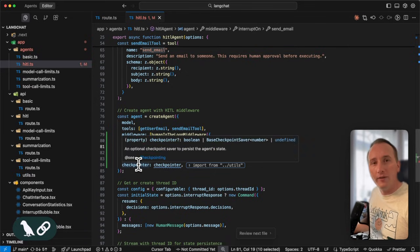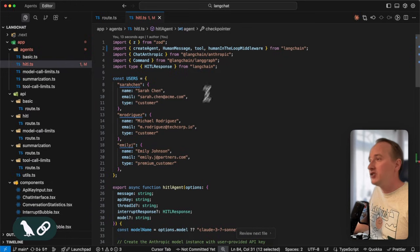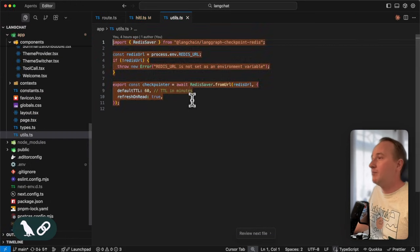Another important point to make this workflow happening is that we have to introduce a checkpointer to our agent. A checkpointer helps us to store the state of the agent at any given point in time. So this checkpointer for this application comes from a utils module that essentially defines a checkpointer using Redis database. So every time the agent calls a tool, it stores its state into that Redis database. And so whenever we approve the call and make a second request, the agent gonna continues where it left off.